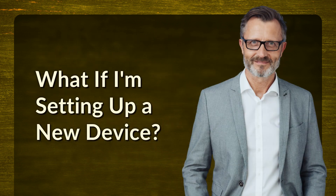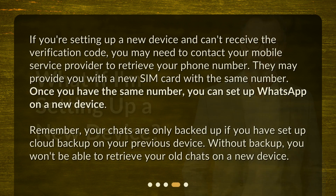What if I'm setting up a new device? If you're setting up a new device and can't receive the verification code, you may need to contact your mobile service provider to retrieve your phone number. They may provide you with a new SIM card with the same number. Once you have the same number, you can set up WhatsApp on a new device. Remember, your chats are only backed up if you have set up cloud backup on your previous device. Without backup, you won't be able to retrieve your old chats on a new device.